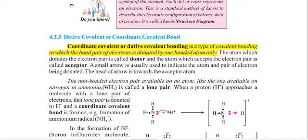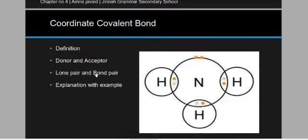The main topic is our Dative Covalent Bond. Dative Covalent Bond or Coordinate Covalent Bond, we have seen the definition of donor and acceptor. The concept is called Lone Pair and Bond Pair. The concept is called Example.